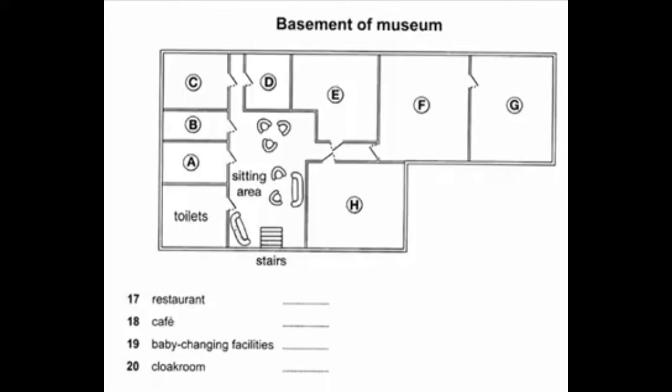The cloakroom, where you should leave coats, umbrellas, and any large bags, is on the left-hand side of the sitting area. It's through the last door before you come to the corridor.